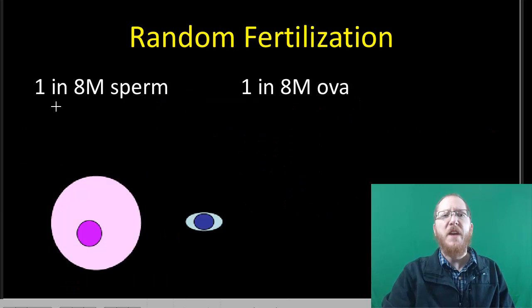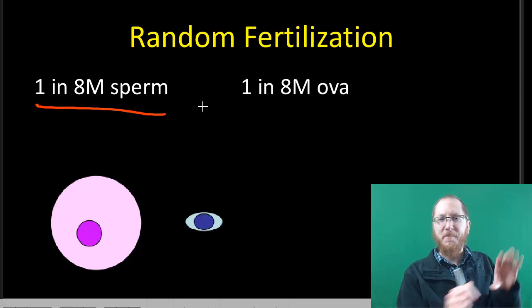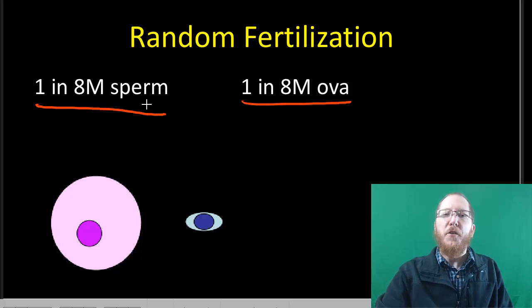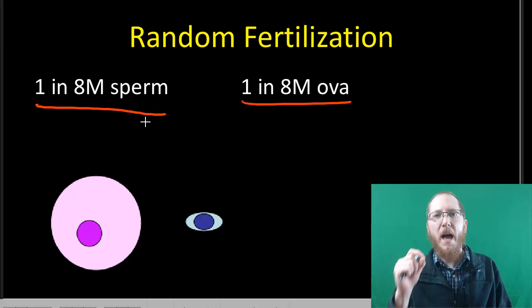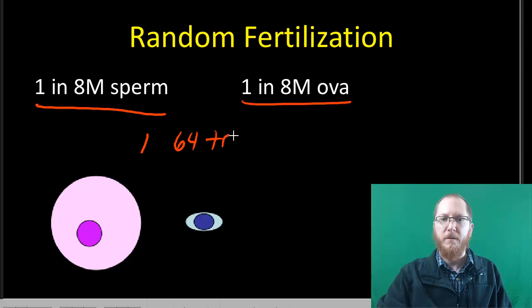Now the third thing is random fertilization. So we've got this sperm that's a 1 in 8 million chance that it's the same. And that's not including crossing over. We're going to ignore that. And then we have this ova, the egg essentially, that's got a 1 in 8 million shot. So for you to get the same sperm that manages to meet up with the same identical egg.